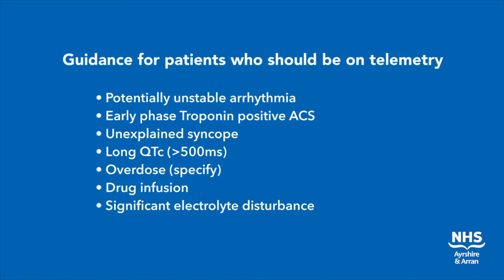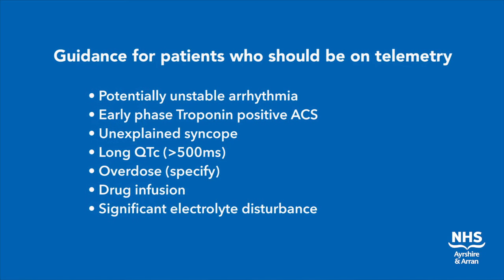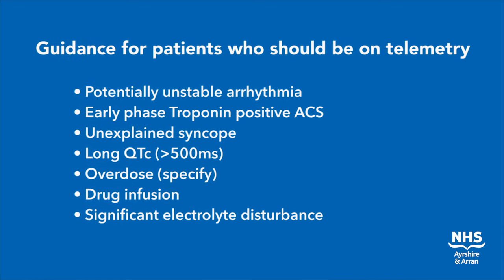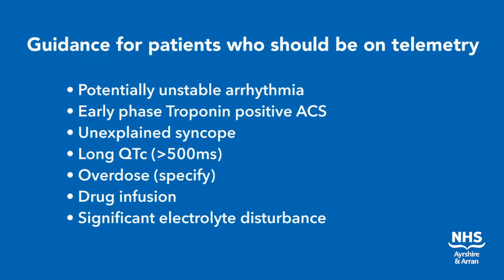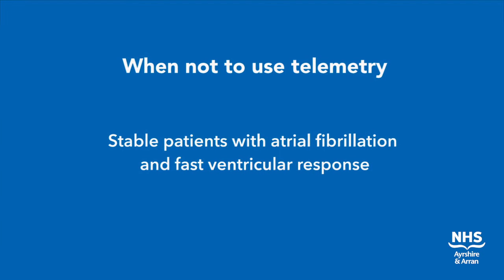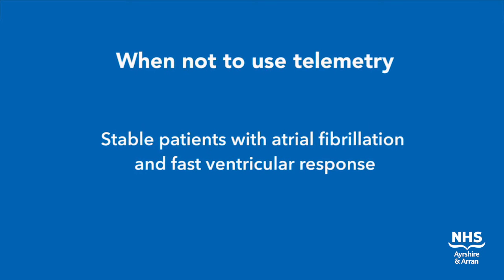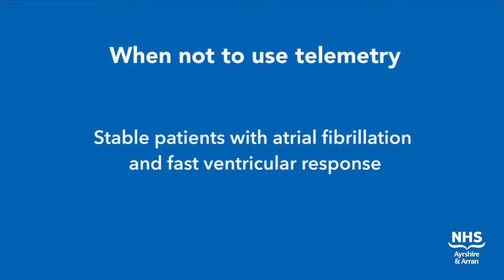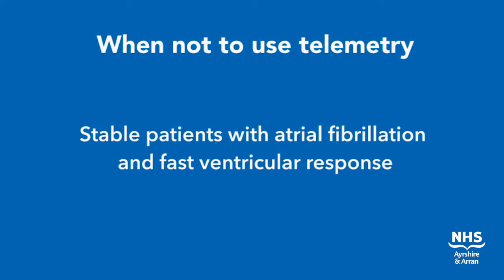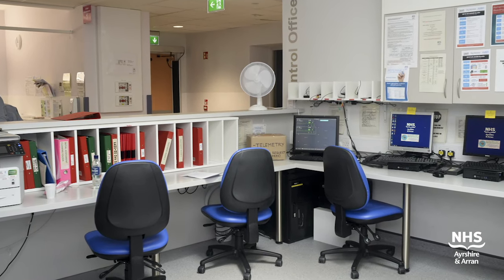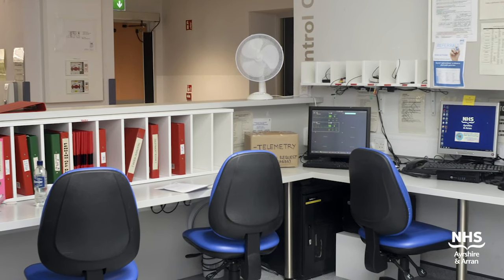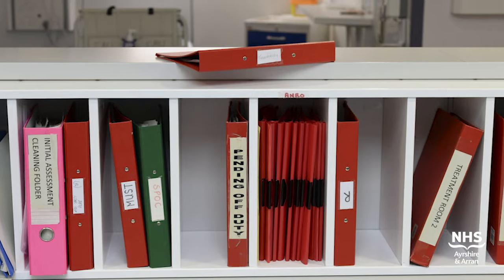There are approximately six telemetry sets in use within the combined assessment unit. There is some guidance available on the indications for their use. Specifically, we advise within the CAU not to use telemetry for stable patients with atrial fibrillation and a fast ventricular response. This guidance is located in a folder labelled telemetry which is stored within the initial assessment unit.